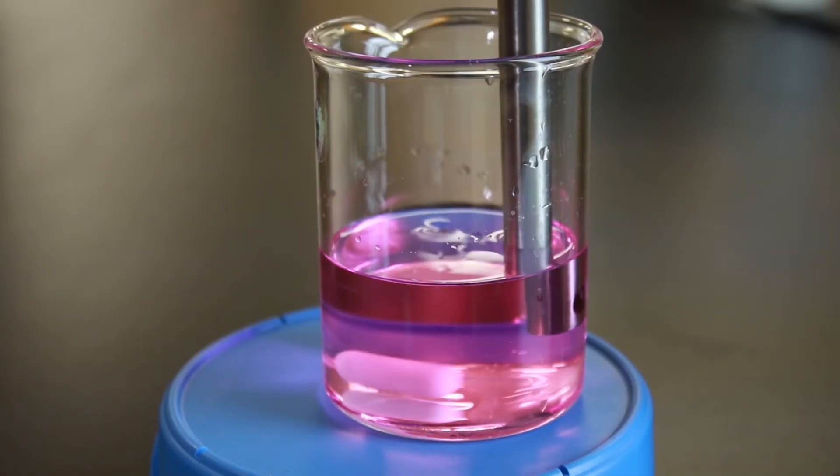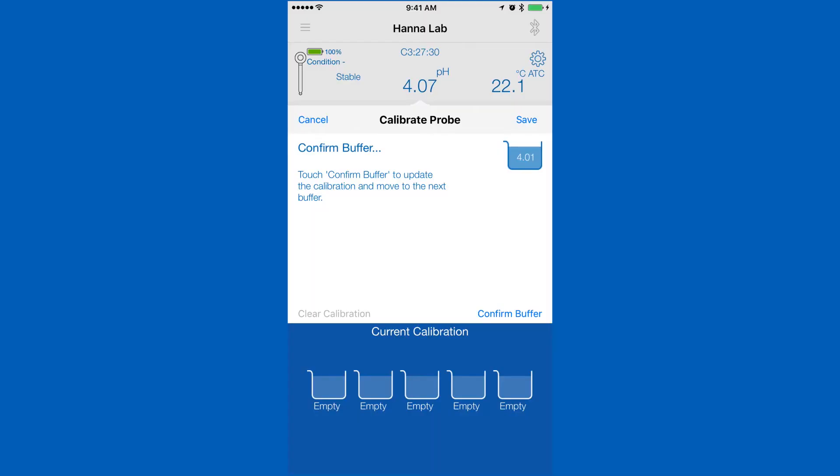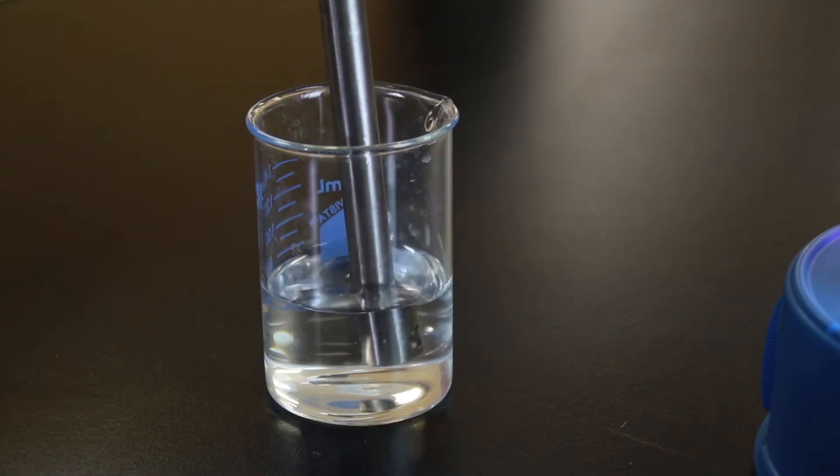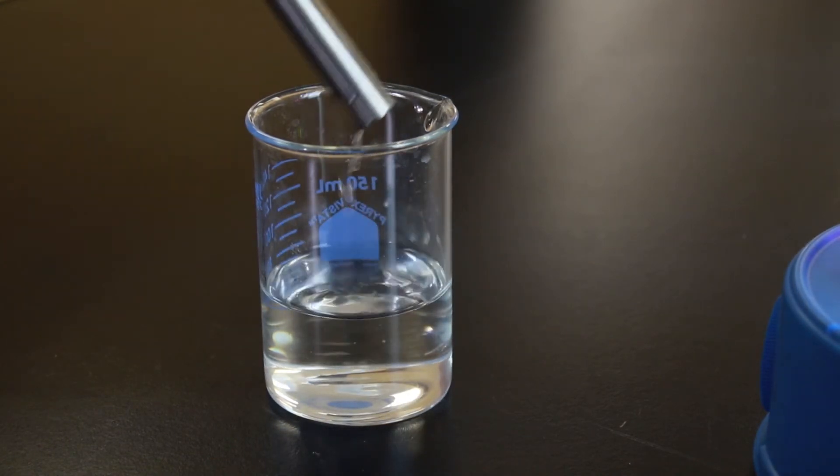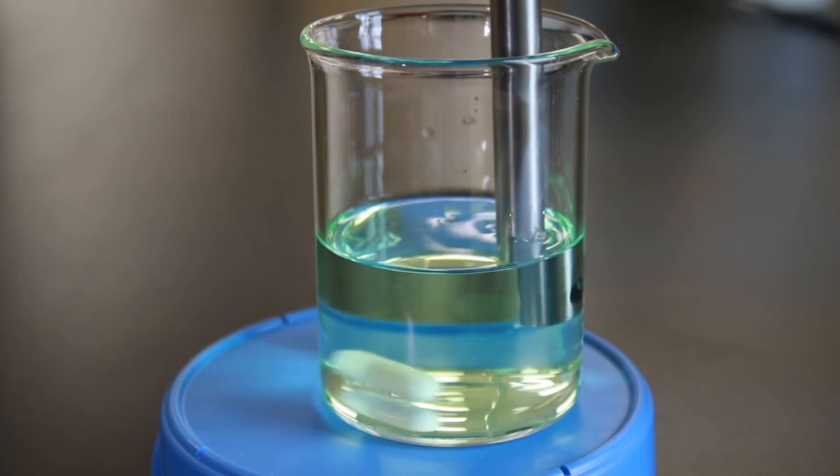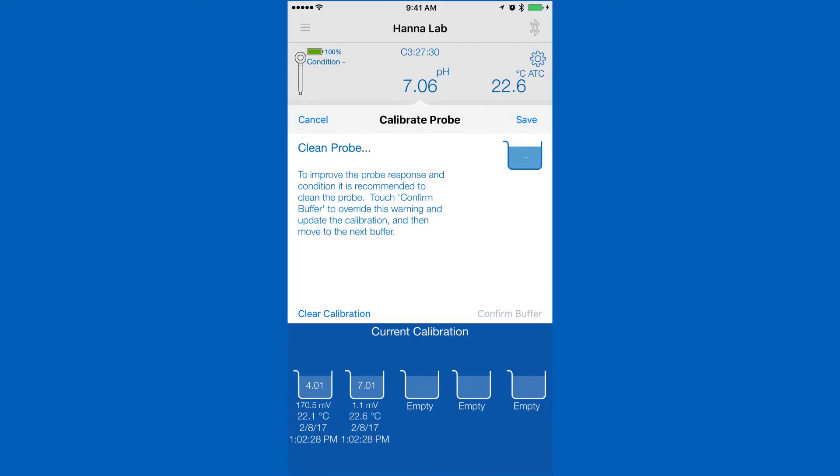Rinse and place your probe in your pH calibration solution and wait for a stable reading. Once stable, tap confirm. To calibrate the next point, first we recommend that you rinse your electrode with deionized water to prevent contamination. Place in the next buffer and your saved calibration will be stored and our app will begin calibrating your next point.